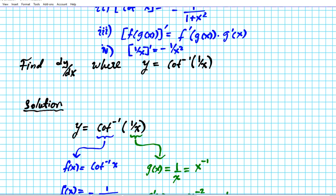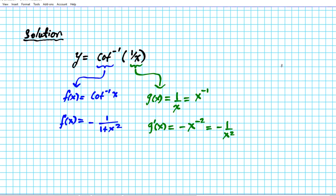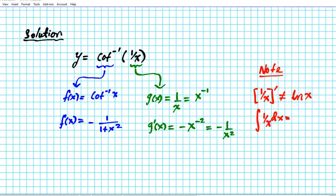There is a common mistake that most students make when differentiating 1 over x. The derivative of 1 over x is not the natural logarithm of x — this is a big mistake a lot of students make. They make this mistake because the integral of 1 over x dx is the natural logarithm of the absolute value of x plus C. They confuse the integration formula with the differentiation formula for 1 over x, so keep this common error in mind.